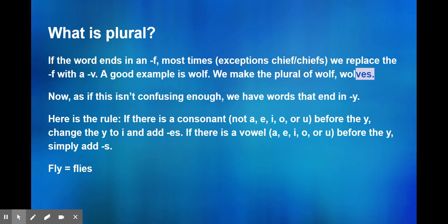Like fly, we change the Y to I and add ES because of that pesky little L right there. Party is parties because of the T before the Y. And baby is babies because of the B before the Y.